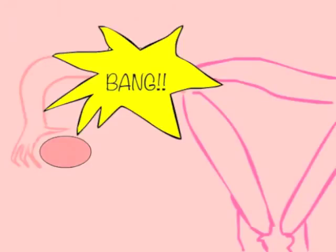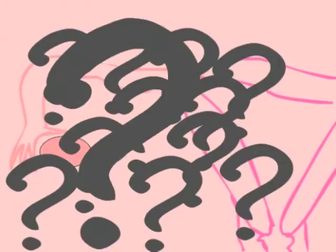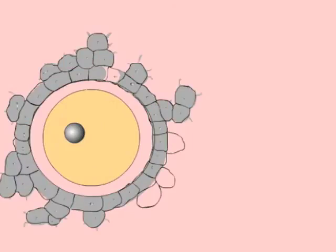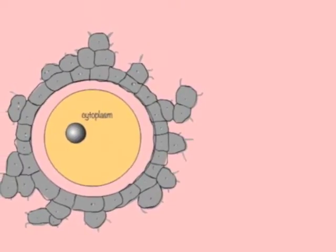We all know how the meet and fertilization occurs, but what does really happen microscopically? Let's remember how an egg cell, or oocyte, is built. First, there is a cell membrane filled with cytoplasm containing a pronucleus with a haploid number of chromosomes, meaning 23.